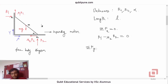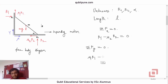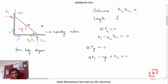For vertical equilibrium, ΣFy = 0. μ1·R1 is acting upwards, weight mg is acting downwards, and R2 is acting upwards. So: μ1·R1 − mg + R2 = 0.